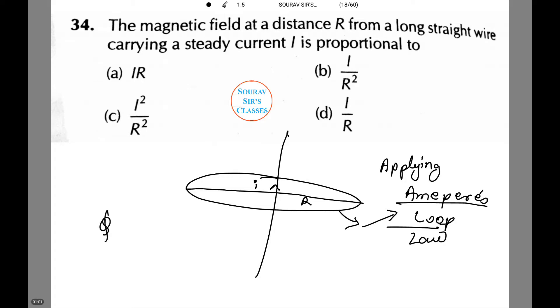Therefore, the closed integral of B·dL equals μ₀I enclosed. Therefore, B times 2πr equals μ₀...